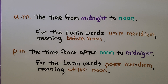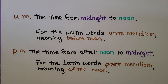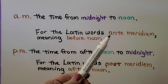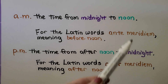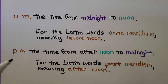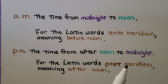Why do we use AM and PM for morning and evening? AM — the time from midnight to noon — stands for the Latin words ante meridiem, meaning 'before noon.' PM — the time from noon to midnight — stands for the Latin words post meridiem, meaning 'after noon.' They're just abbreviations for Latin words.